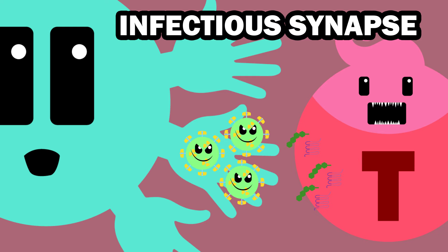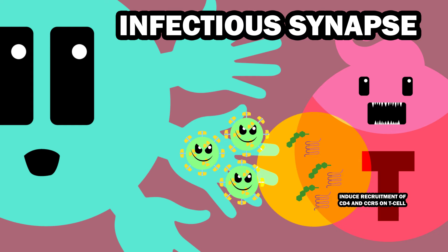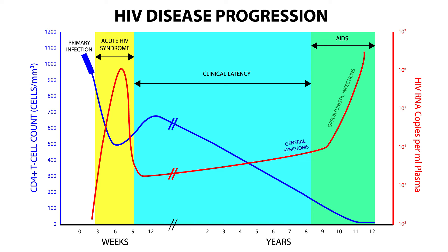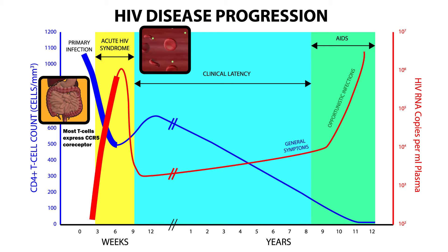One way in which dendritic cells can transfer HIV to T-cells is via an infectious synapse, in which the dendritic cells concentrate intact virions at the point of contact with a T-cell and induce recruitment of CD4 and CCR5 on the T-cell. The bulk of CD4-positive T-cell loss occurs in the first few weeks post-infection. The greatest number of casualties occur in the intestinal mucosa, where most of the body's lymphocytes reside and where the majority of T-cells express the CCR5 co-receptor. There is now a big spike in HIV replication and the amount of virus in a patient's blood — at this time there can be several million viral particles per milliliter of blood — and there is a large drop in circulating helper T-cells.